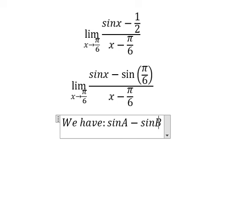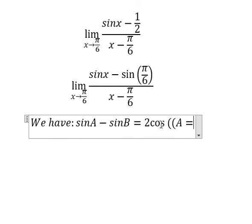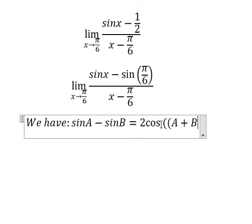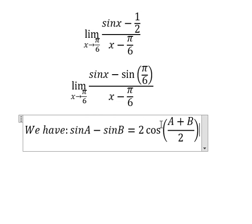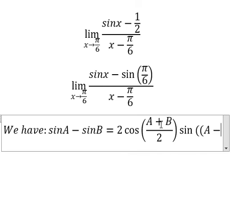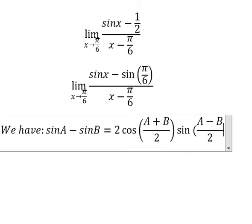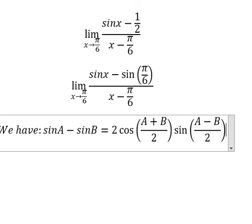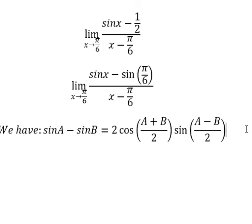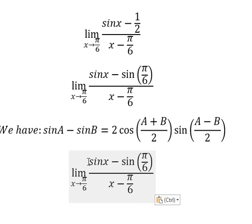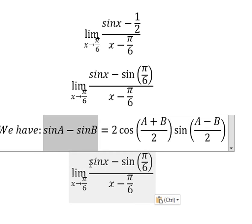sin A minus sin B equals 2cos((A+B)/2) times sin((A-B)/2). So we transform from this expression into this one.